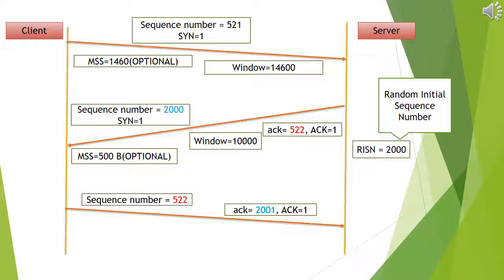After receiving information from the server, the client will send an acknowledgement of that information and will send the next sequence number to the server. The sequence number 522 that the client sends to the server is the number received in the acknowledgement from the server, so the next sequence number is the previous acknowledgement received. The acknowledgement will be the last sequence number plus 1 — the last sequence number received is 2000, so acknowledgement sent is 2001. ACK equals 1 proves the acknowledgement is valid.